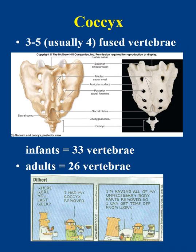The coccyx is formed by the fusion of four small coccygeal vertebrae, fusing around age 25. It serves as an attachment site for several ligaments and muscles. In males the coccyx tends to project anteriorly, whereas in females it tends to project more inferiorly so as not to obstruct the birth canal.